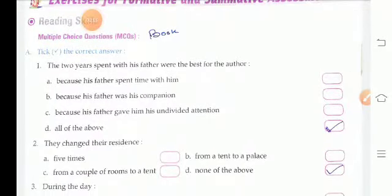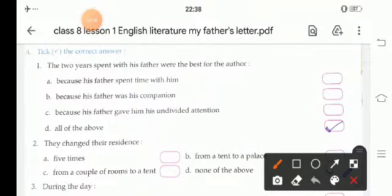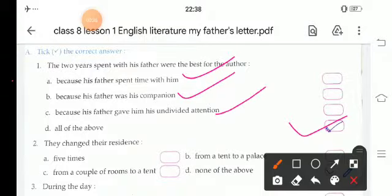Multiple choice questions. The first: The two years spent with his father were the best for the author. It was all of the above - because his father spent time with him, because his father was his companion, and because his father gave him undivided attention. So the answer will be all of the above.